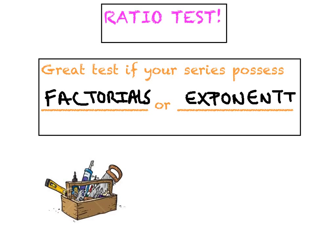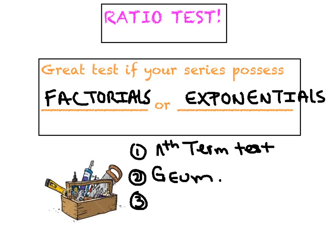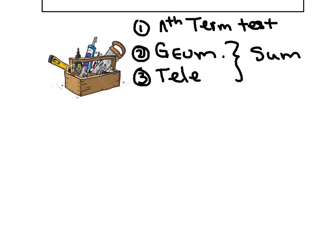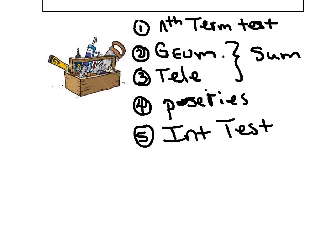Before we get into the nuts and bolts of the ratio test, I want to review exactly what our toolbox looks like. I want to encourage you to apply the nth term test instantly to every series you encounter. If that limit doesn't equal zero, it instantly diverges. We also had the geometric series and the telescopic series, which were interesting because we could actually find the sum. Then we worked with p-series and the integral test.